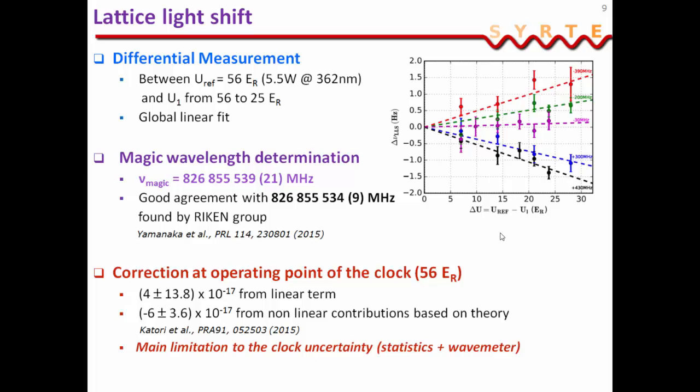And then, what we do is we want to verify that we indeed don't resolve the non-linear light shift. So, we perform the non-linear fit on this data and check that it's consistent with our linear fit within the uncertainty. And as well, we calculate the non-linear lattice shift based on a theoretical model, and we correct for this shift in post processing. And so, this shift is the main limitation to the clock uncertainty, mainly due to the wave meter which is used to lock the lattice light.